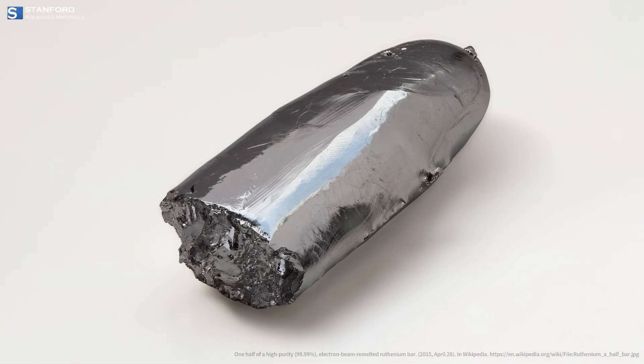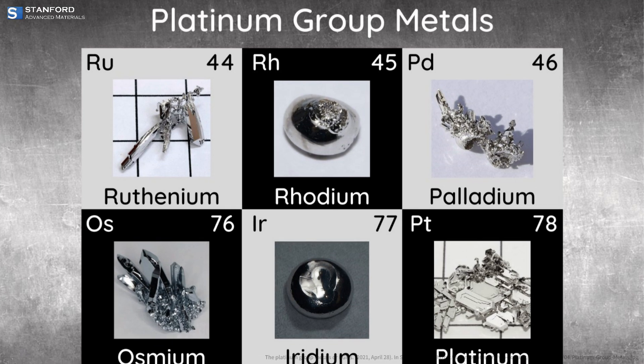Ruthenium is a hard, brittle and silvery white metal. It belongs to the platinum group, known for its exceptional resistance to corrosion and oxidation.